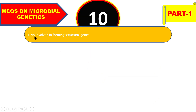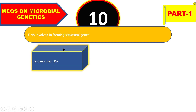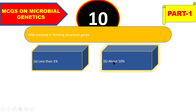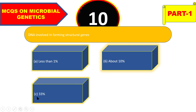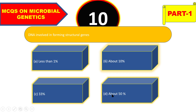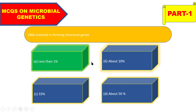Next question: DNA involved in forming structural genes is less than 1%, about 10%, 33%, or about 50%? The right answer is less than 1%. So DNA involved in forming structural genes is less than one percent.